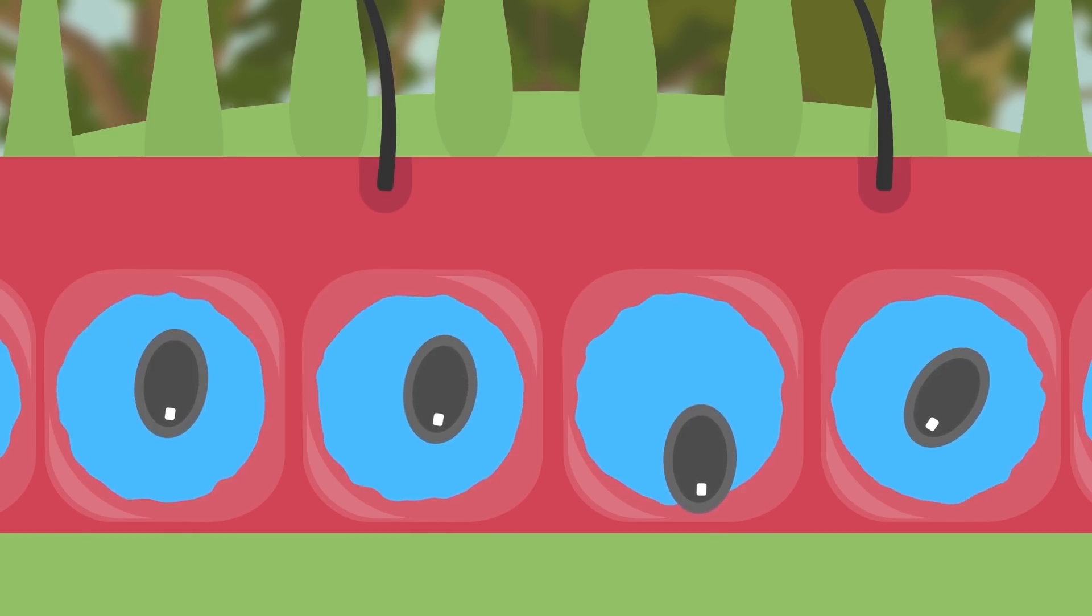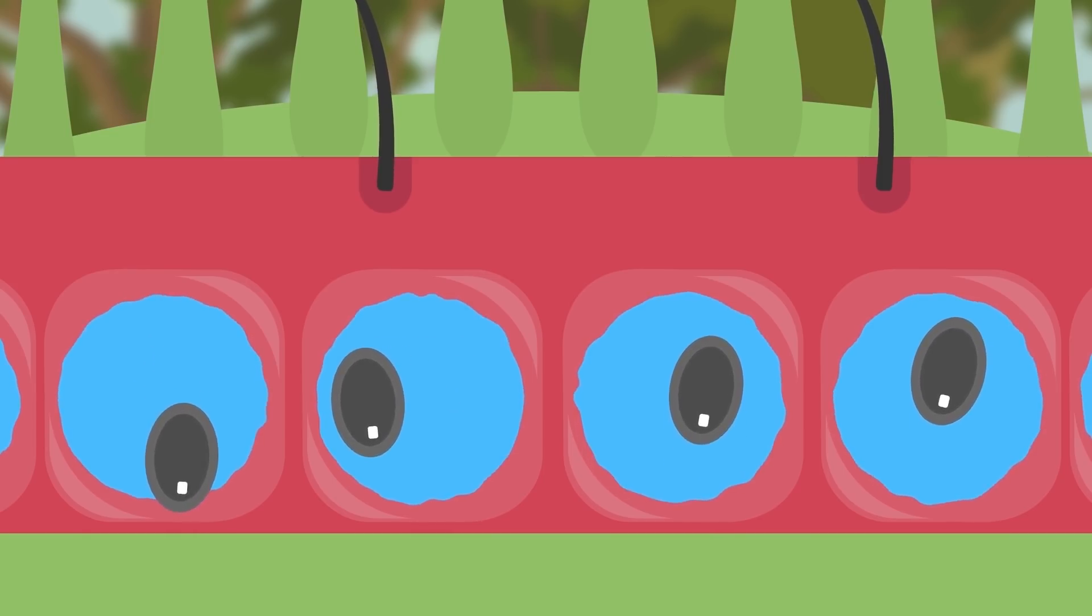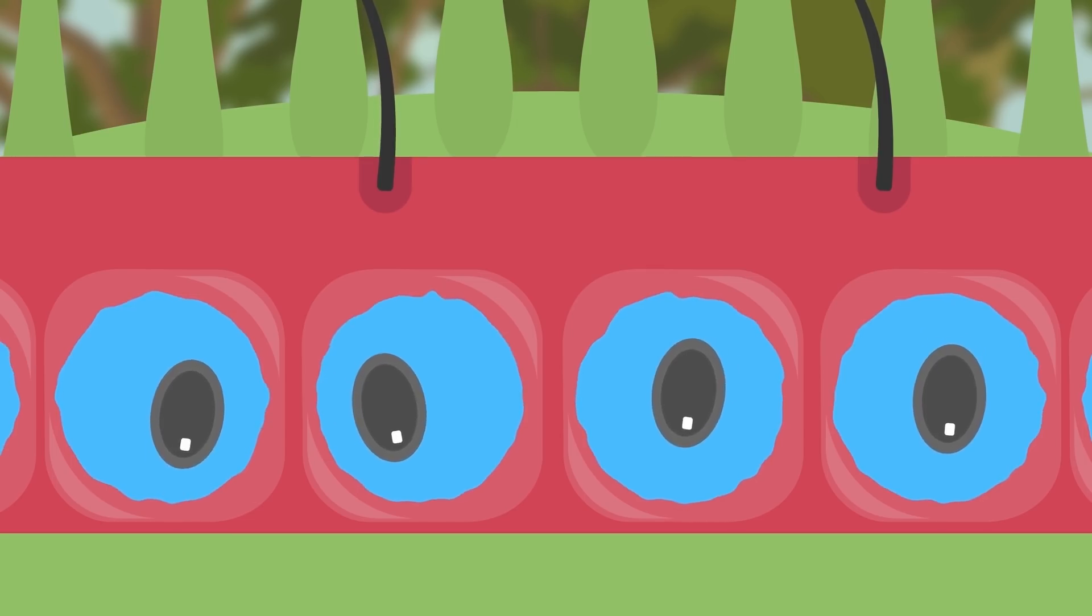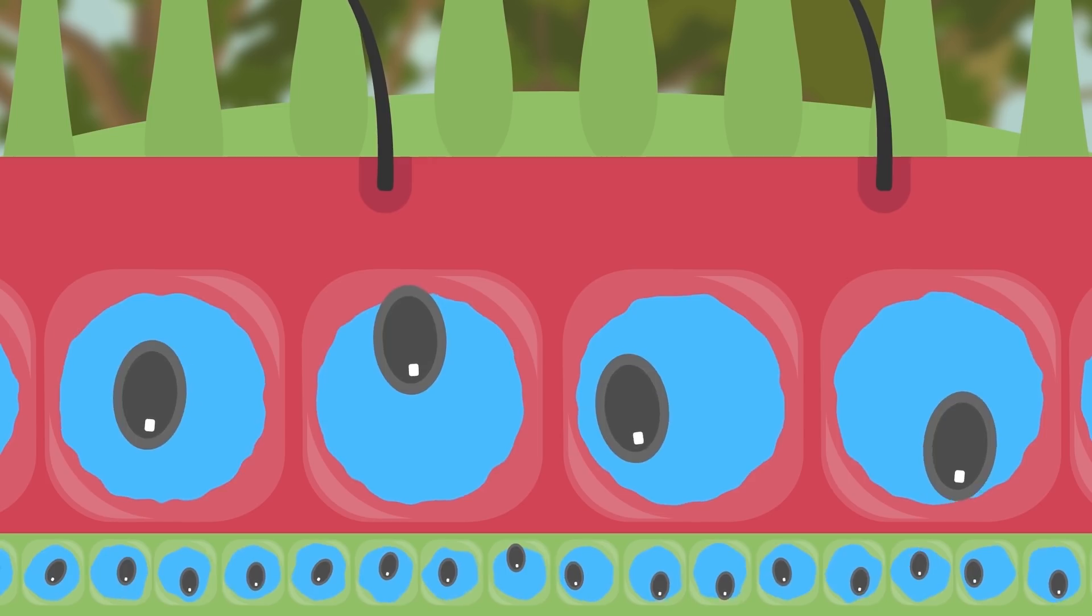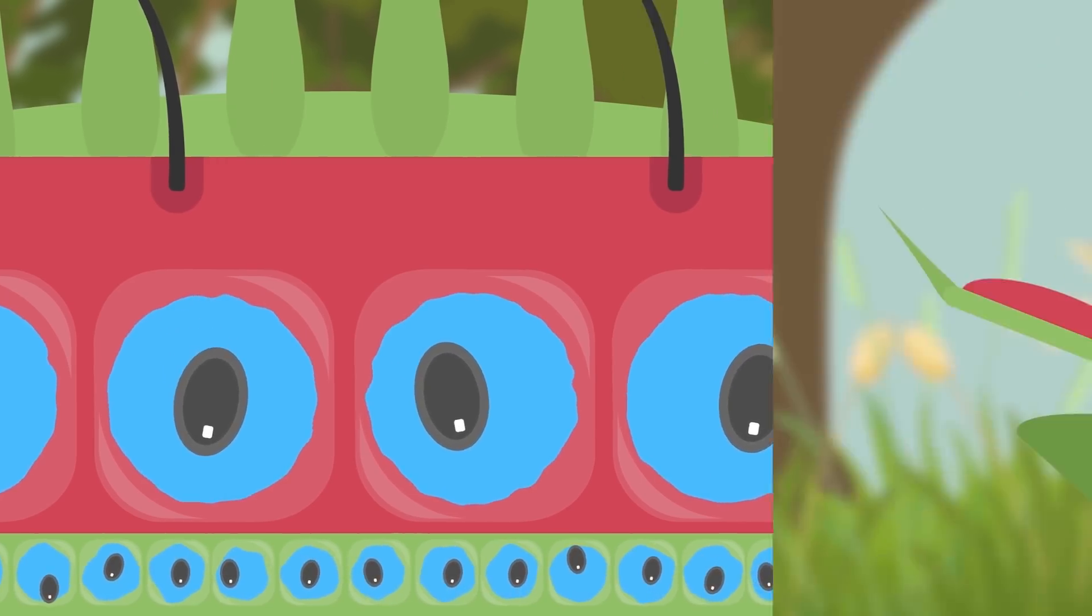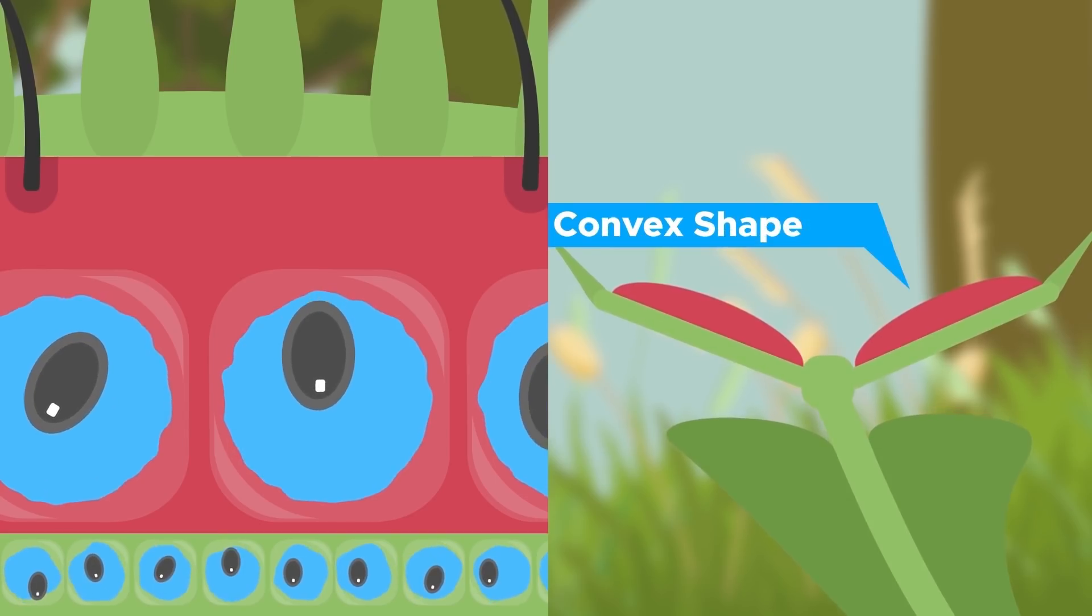Researchers found that when the trap is in its open state, the cells on the inside of each lobe are blown up with water, while the cells on the outside have only little amounts of water in them. This creates a pressure imbalance that forces the lobes in a convex shape.